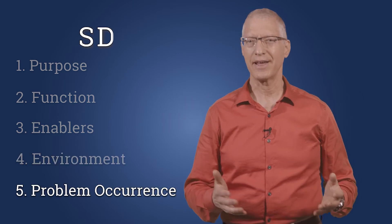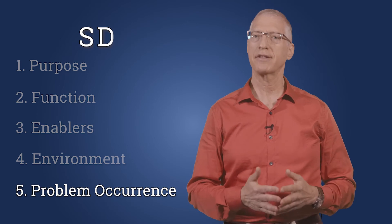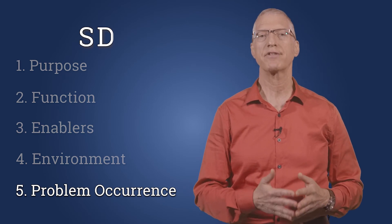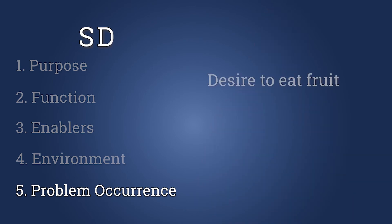The fifth and last SD component is the problem occurrence. Any artificial system aims to solve some problem. In our case, people are hungry and want to eat fresh food without having to leave their seat.